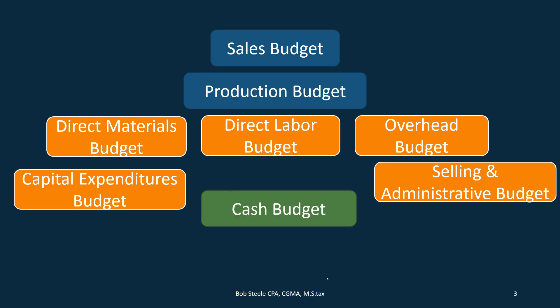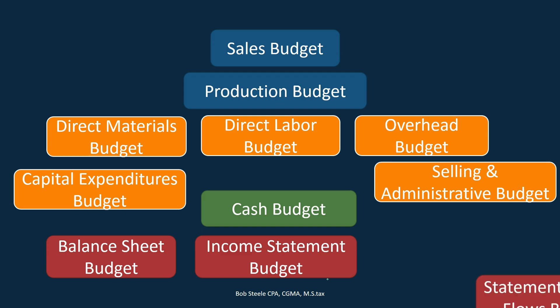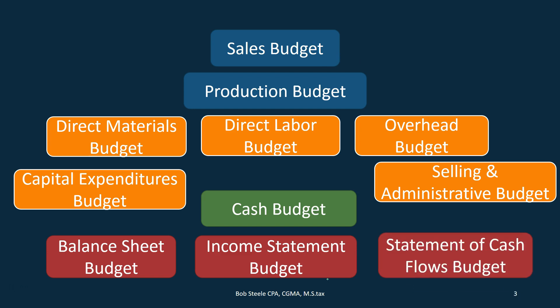We then created the cash budget — the cash flow budget. Then, in between making our financial statements such as the balance sheet, the income statement, and the statement of cash flows, we needed the cost of goods sold. Therefore we had to create the cost of goods manufactured and the cost of goods sold calculations, which have been done in order to help us with the budgeted income statement.